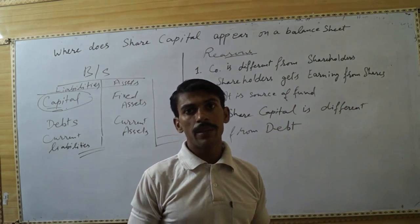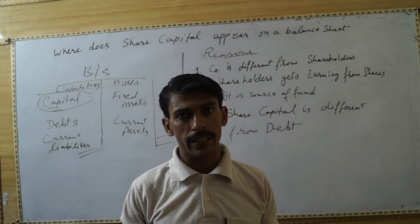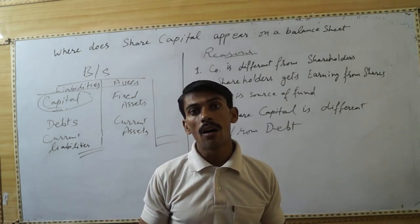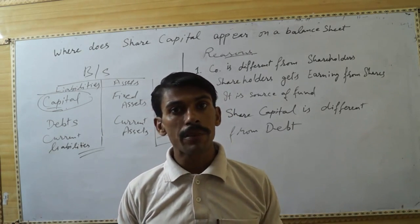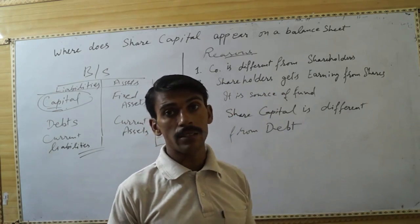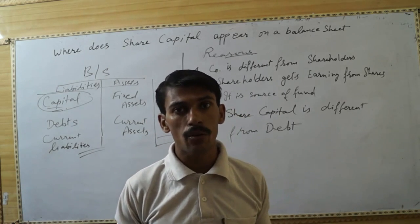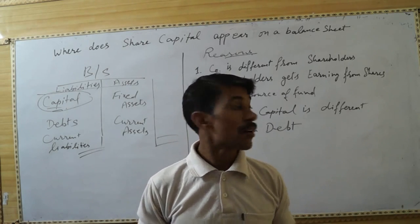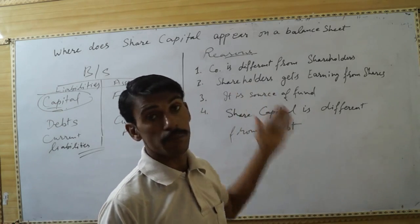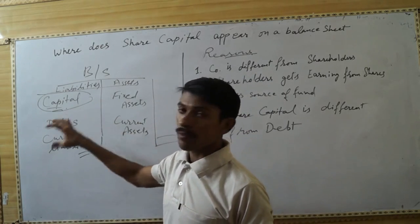The second reason is that the shareholder's earnings from shares are not fixed but fluctuating. If the share price increases or the company earns a large profit, shareholders will get the highest dividend. But if the company is suffering losses, shareholders will not get anything, because shareholders are businessmen and their investment is different from debt.